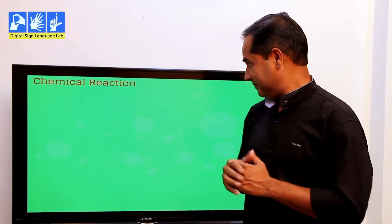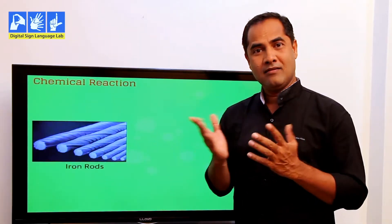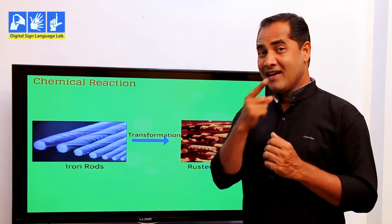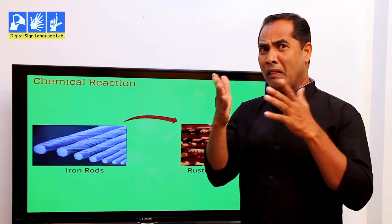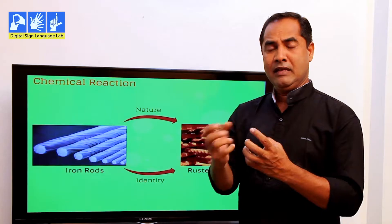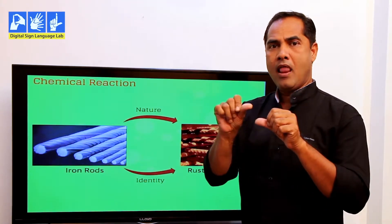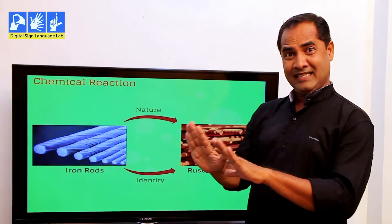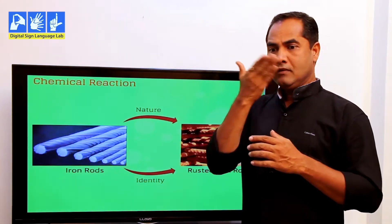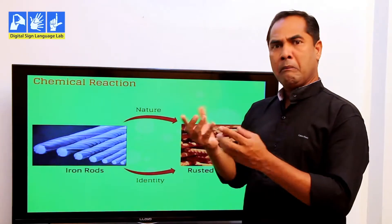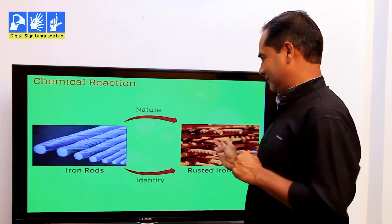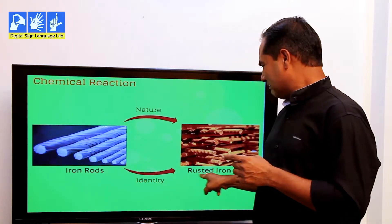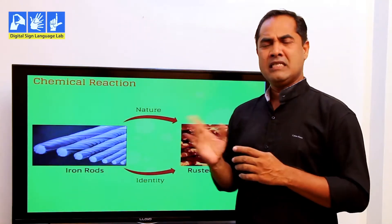I want to give you two more examples. That's a metal iron rod, and what has happened to it — it has become rusted with rain, wind, and moisture. The color has changed. That is a chemical reaction. If you keep the iron rod in contact with air and moisture, it changes. It rusts. On the left-hand side you can see iron, and on the right-hand side you see rusted iron.